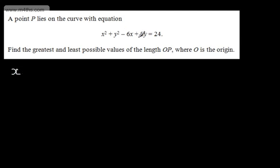So we'll have x plus half of the coefficient, which will be minus 3. We square the bracket and subtract away 9. We will then add to that y plus half the coefficient, so y plus 4. We square the bracket and subtract away 16.